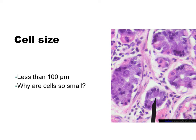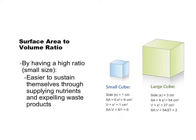Let's start by looking at cell size. Cells are less than 100 micrometers. There are a few factors that contribute to the cell size limit, but the key factor is surface area to volume ratio. Surface area is the area covered by the plasma membrane, and the volume is the space taken up by the inner contents of the cell. As a cell grows, the volume increases much more rapidly than the surface area. It's beneficial for a cell to have a high surface area to volume ratio, meaning just to have a small sized cell.